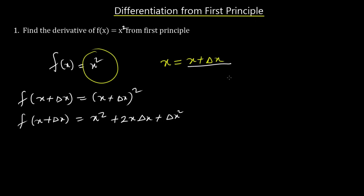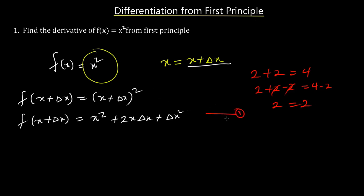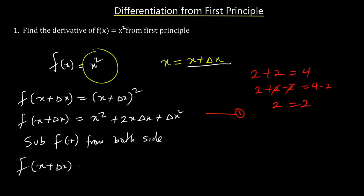Recalling from simple mathematics, if you subtract the same value from both sides of an equation it remains valid. So the next step — the second stage — is to subtract f(x) from both sides. This gives us f(x + dx) − f(x) = x² + 2x·dx + dx² − f(x).